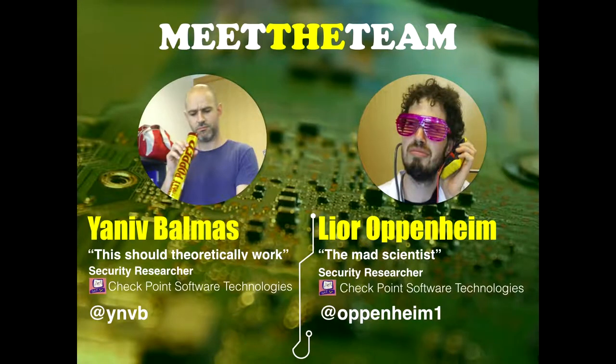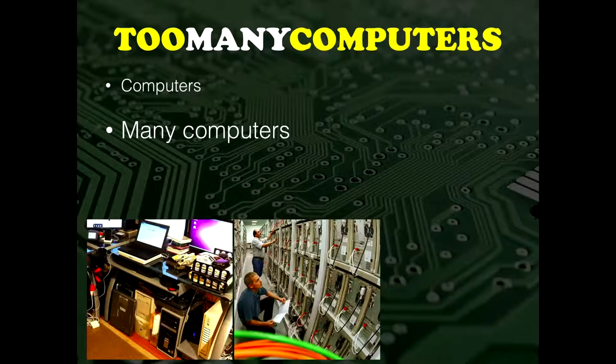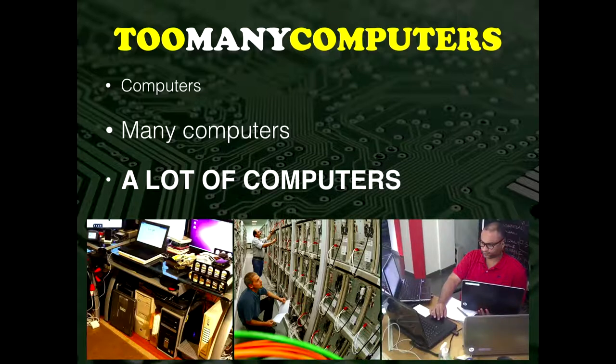Let's start with the problem. As with many computer science related problems, it all starts with computers. We have computers — we have many computers, actually a lot of computers. Each one of these computers actually needs a set of keyboard, video, and mouse in order to operate. When we have a lot of computers, we also have a lot of keyboards, a lot of monitors, and a lot of mice.